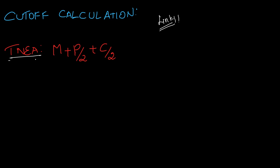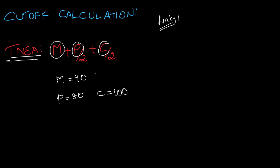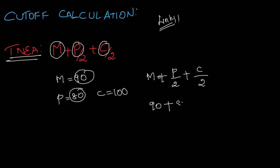First, you calculate the max mark, and physics mark divided by 2, and chemistry mark divided by 2. For example, if you want the max mark as 90, physics 80, and chemistry 100, then you add up the max mark, physics mark divided by 2, and chemistry mark divided by 2.